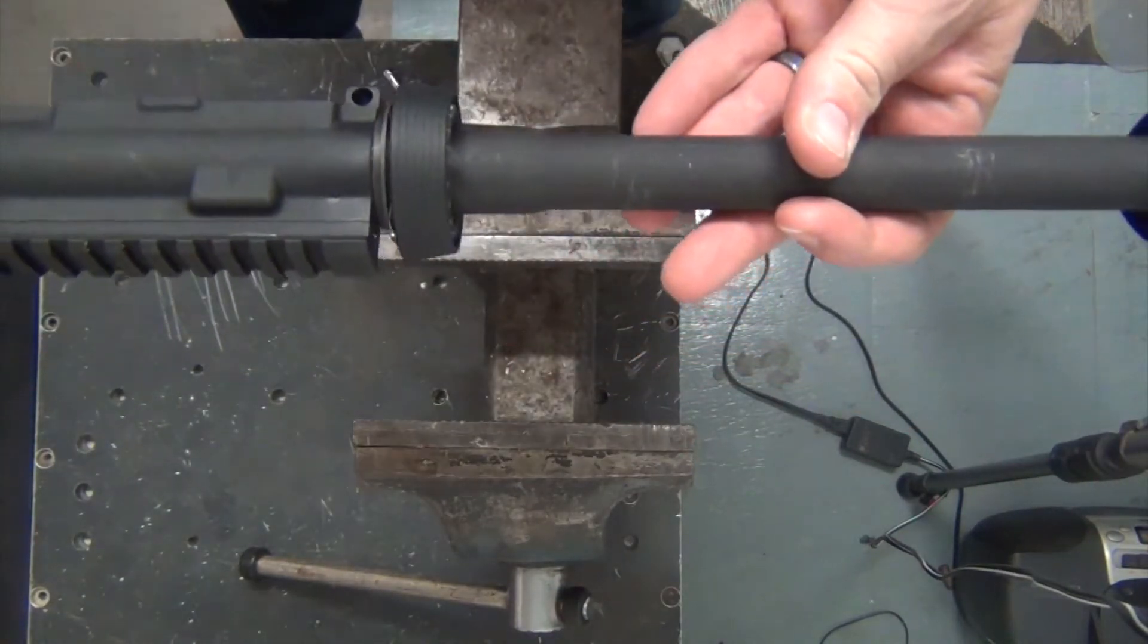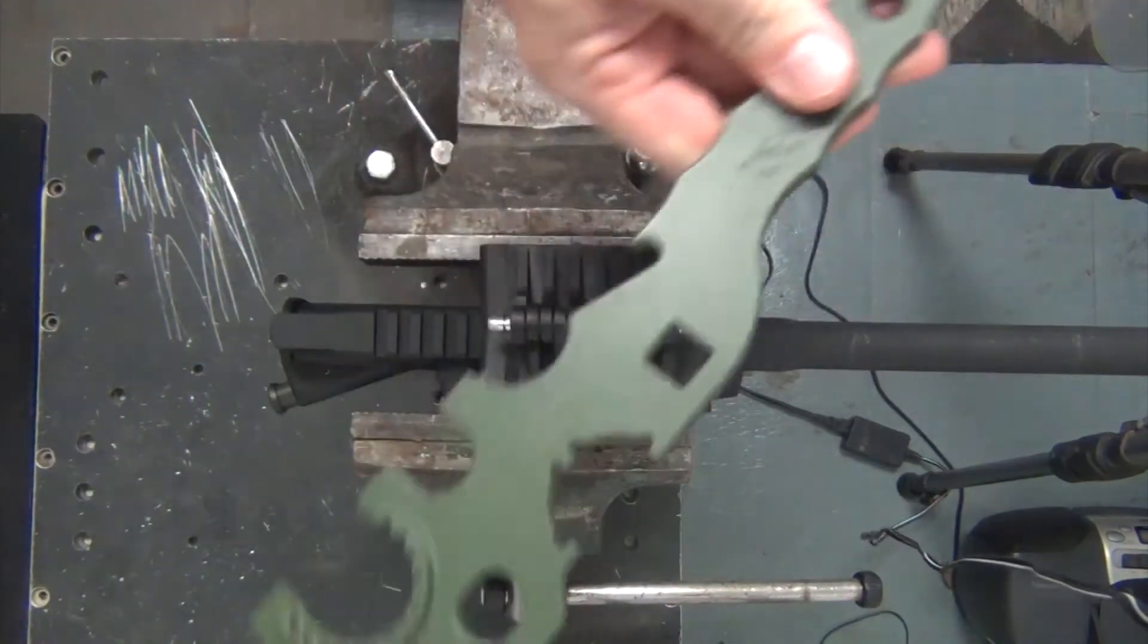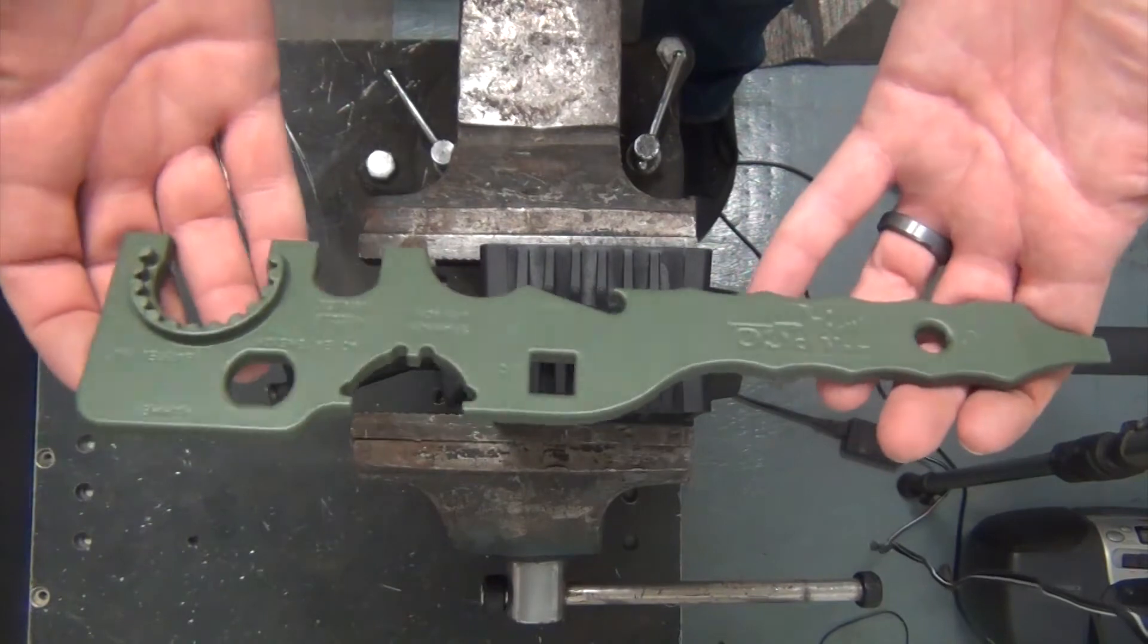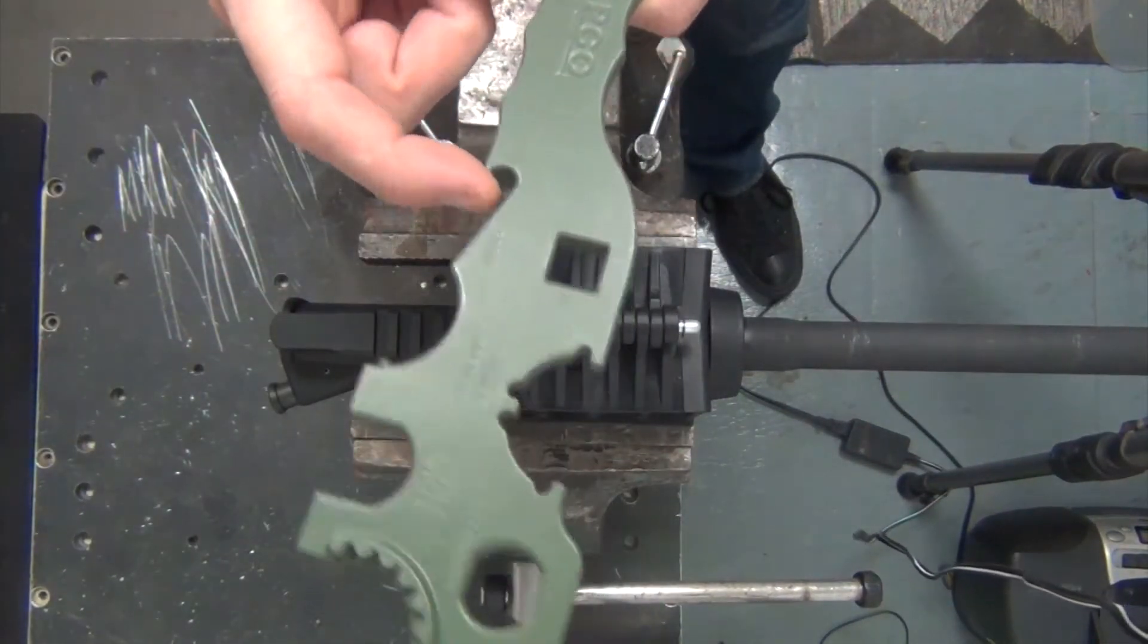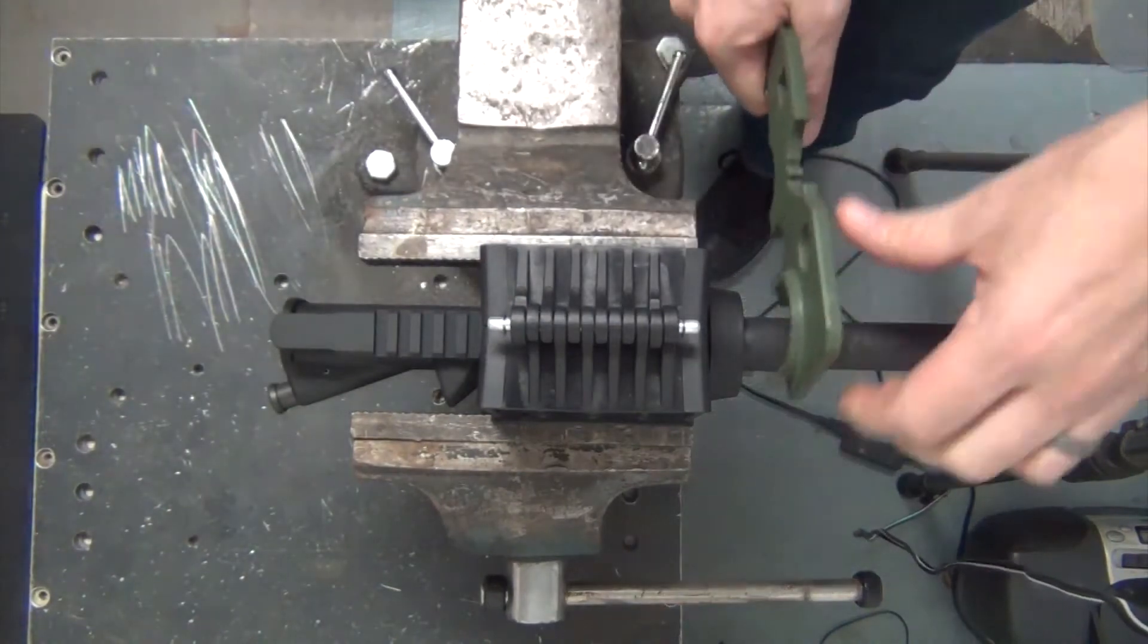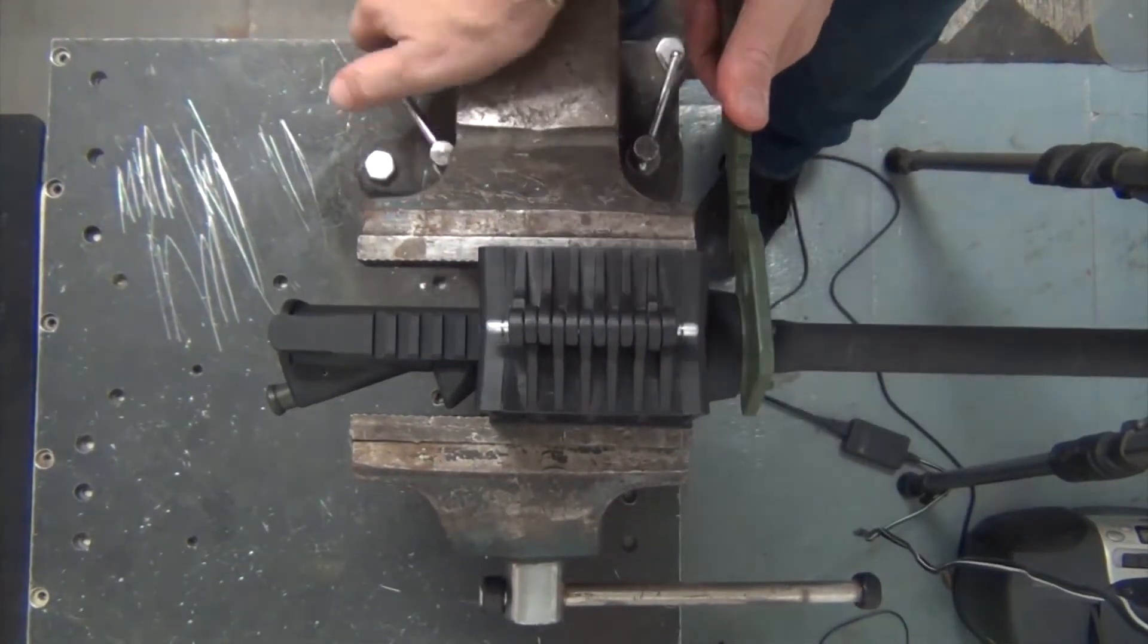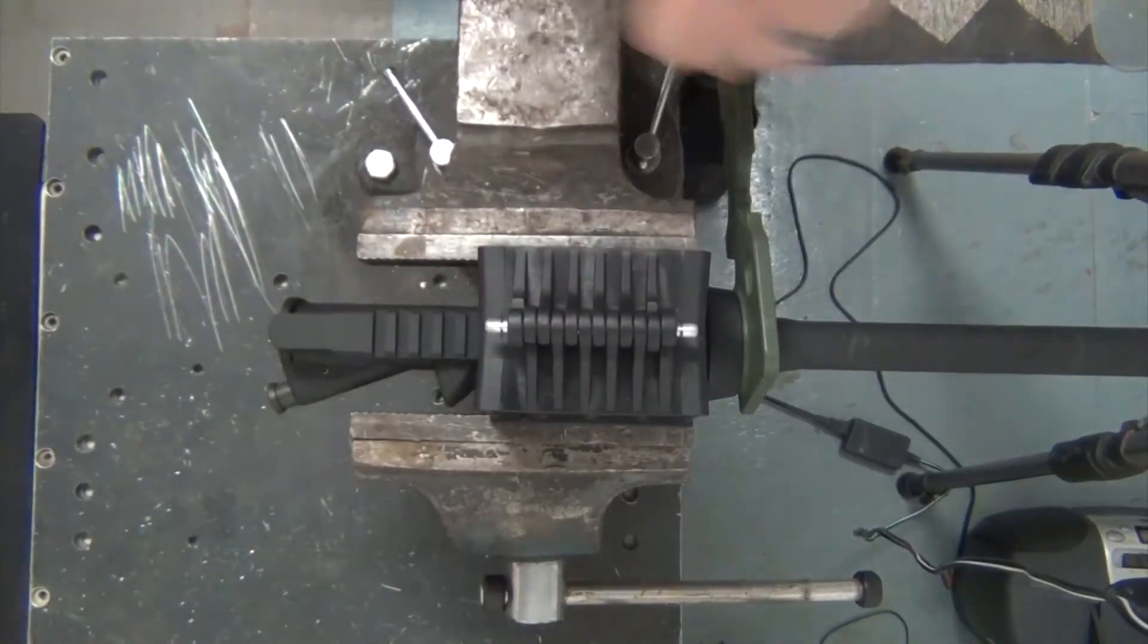So let's take this barrel out. The most awesome AR Armorer's tool in the world. The Tapco AR Armorer's tool with the beer bottle opener. I like it. Oh god, do I need a breaker bar?